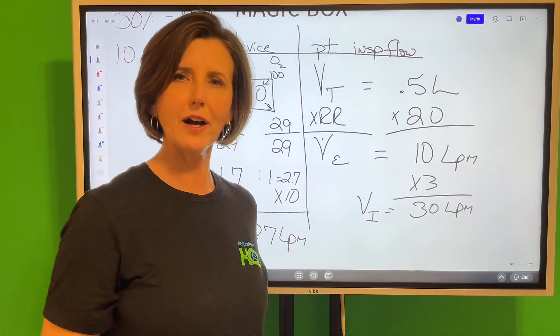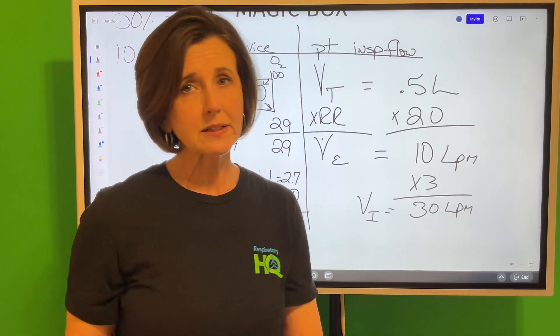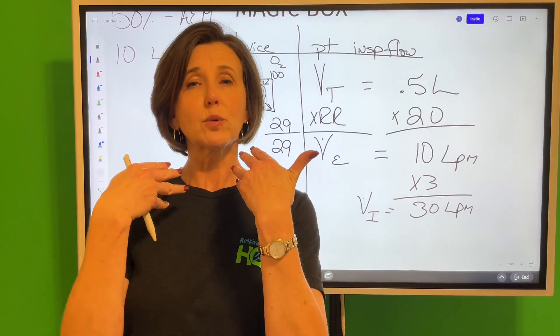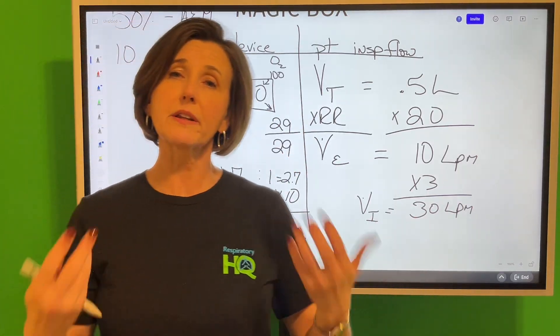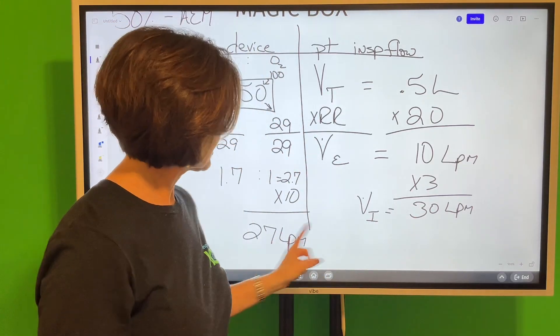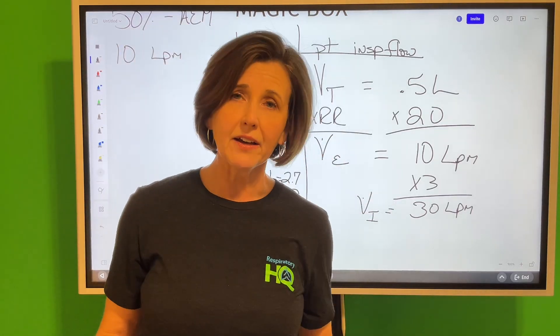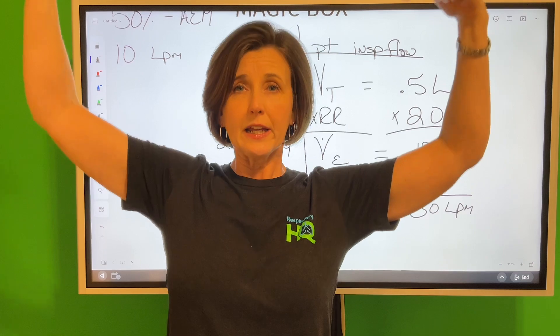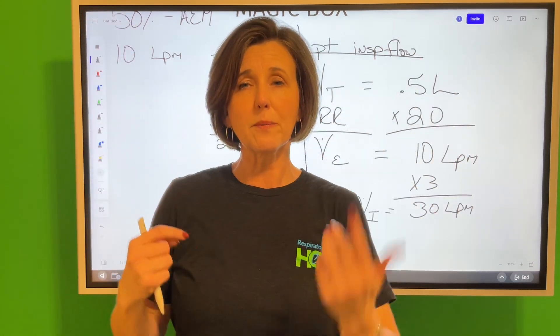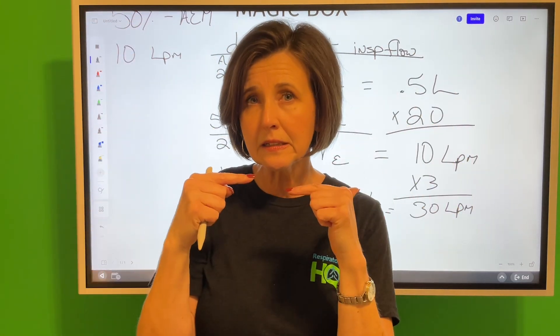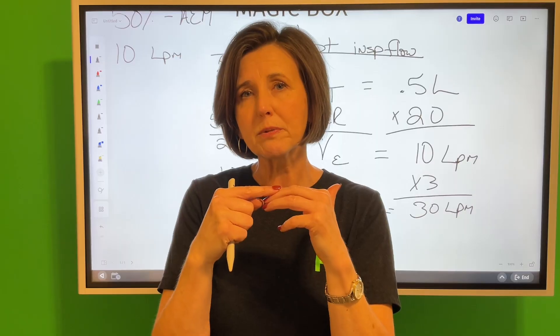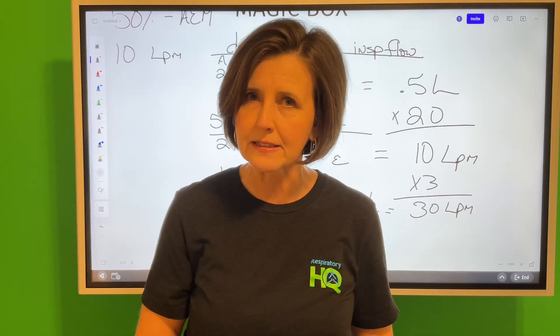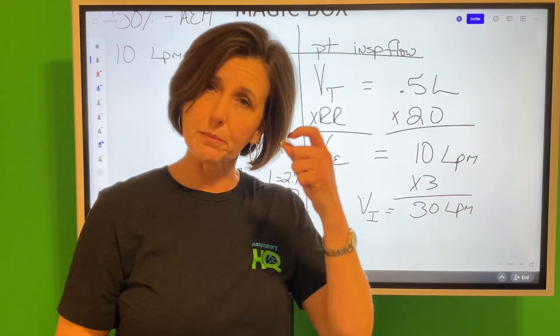Now here's what we've got going on. We've got a mask on them that is only delivering a flow of 27, but our patient's breathing in 30. That means there's an extra three liters per minute they have to get somewhere, and the way they're going to get that is to draw room air in through the holes on the side of their mask. And when that air comes in, it mixes with that 50% and they're not getting 50% anymore, they're getting significantly less.